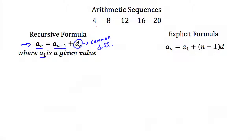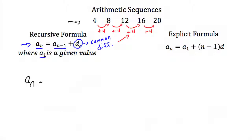Going from 4 to 8 we add 4, from 8 to 12 we add 4, from 12 to 16 we add 4, and from 16 to 20 we add 4 — so our common difference is 4. The recursive formula for this arithmetic sequence would be: a_n equals a_(n-1) plus 4.